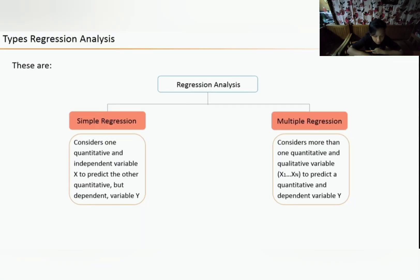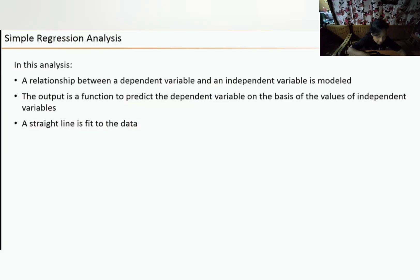Let's look at the two main types of regression analysis: simple linear regression and multiple linear regression. Both use a linear equation to model the relationship between two or more variables. Simple linear regression considers one quantitative independent variable x to predict the dependent variable y. Multiple linear regression considers more than one quantitative or qualitative variable to predict a quantitative dependent variable y. The dependent variable is continuous; the independent variable can be continuous or discrete.